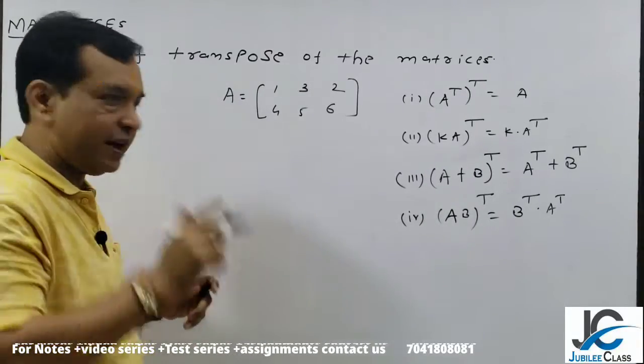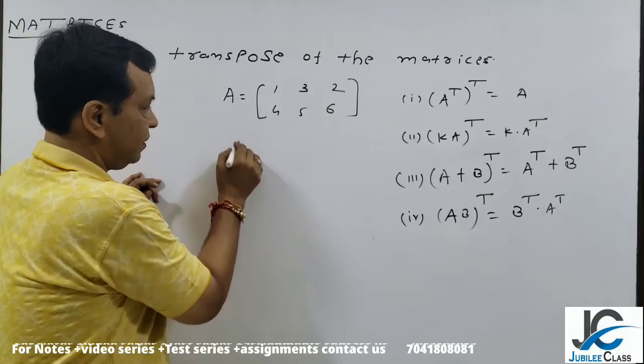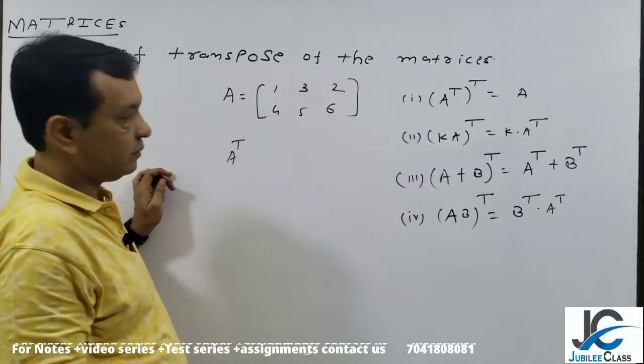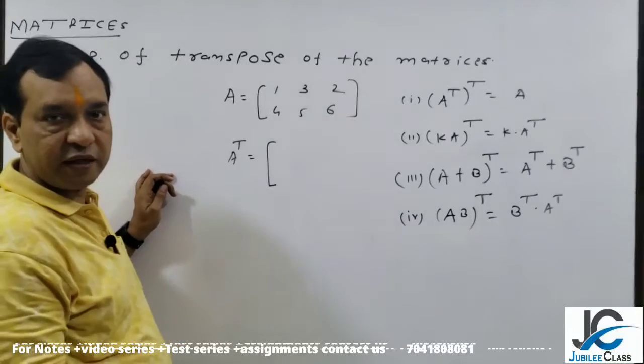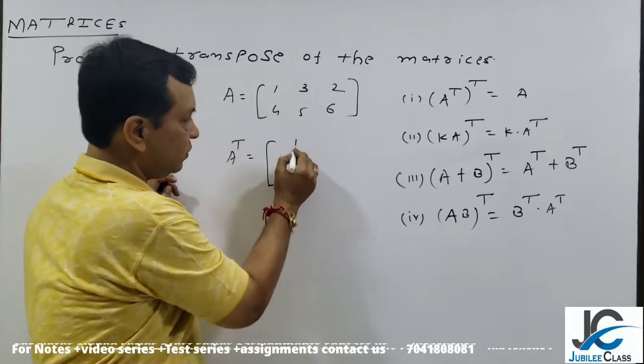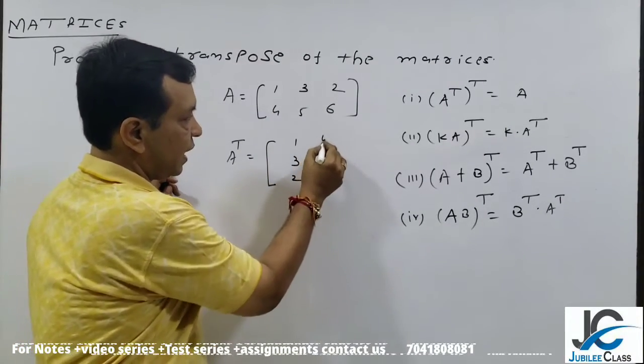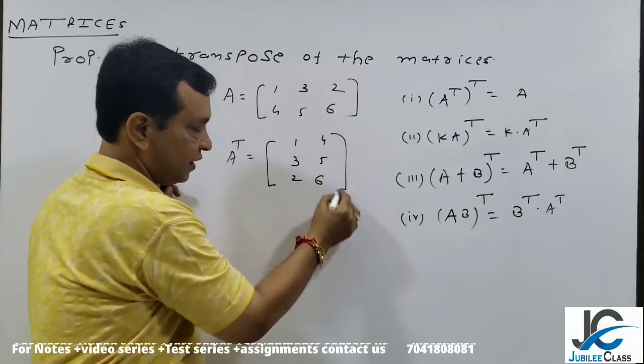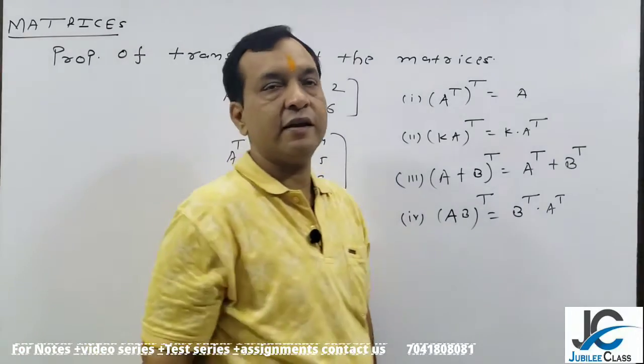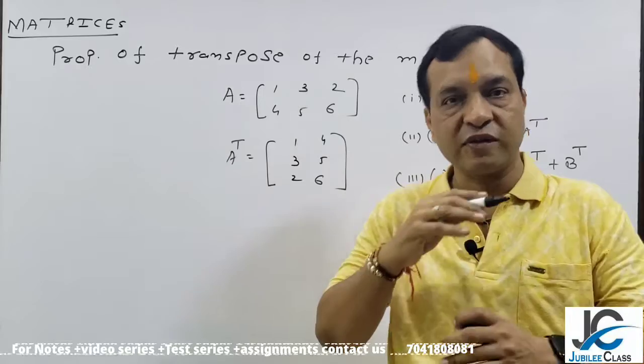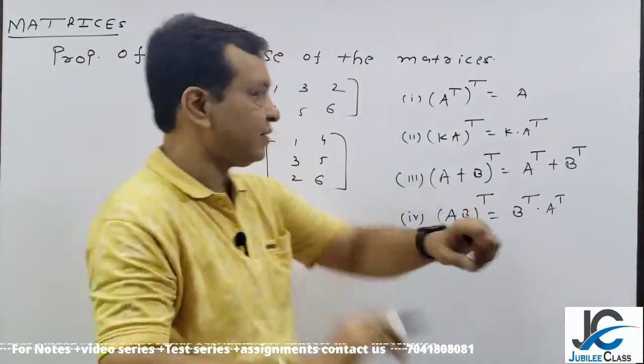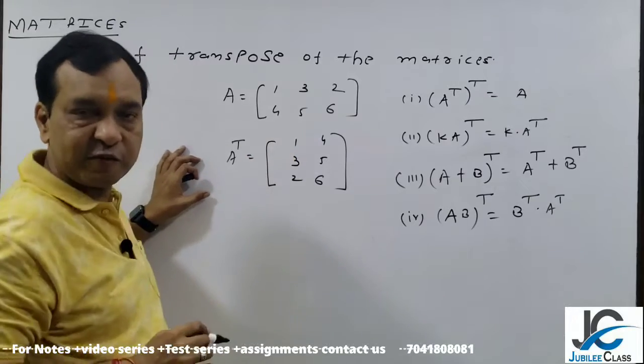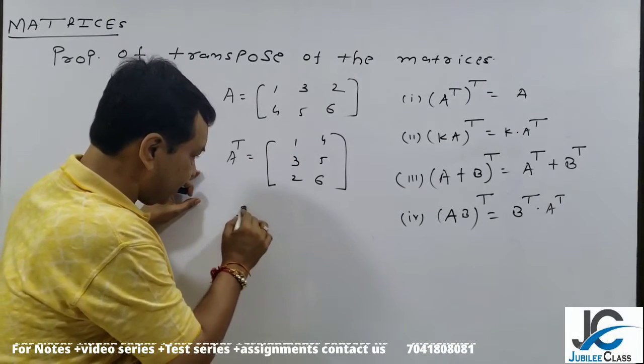What is the transpose of this? Simple here, A^T will be [1, 4; 3, 5; 2, 6]. Is that clear? Now, I need to take its transpose again. Then if I take the transpose again, see, when we apply the transpose, every row converts to column and column converts to row.